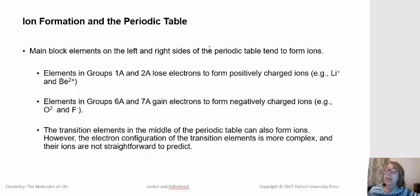So this slide sums up some of the charges that you'll be expected to predict. Elements in group 1A always lose 1 electron to form a charge of positive 1. Group 2A always lose 2 electrons to form a charge of positive 2. Elements in group 6A gain 2 electrons to get an overall charge of negative 2. And elements in 7A gain 1 electron to have an overall charge of negative 1.